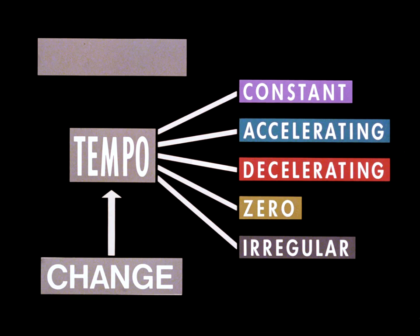All change must have a tempo and fall into one of the five categories. Its tempo depends upon the amount of difference between the two scenes, and more especially, upon the length of the mix. Here is a range of mix lengths.